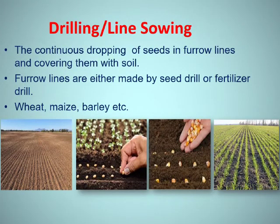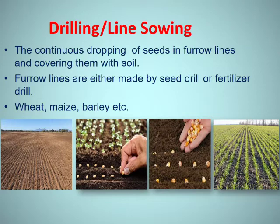Now coming to the second method, that's drilling or line sowing method. The continuous dropping of seeds in furrow lines and covering them with soil is called drilling or line sowing method. Furrow lines are either made by seed drill or fertilizer drill. This method is used in wheat, maize, barley, etc.